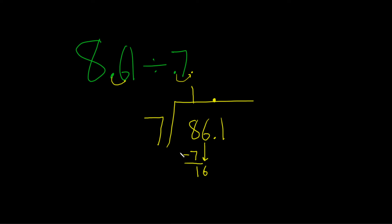Then you repeat. How many times does 7 go into 16? Well, twice. Because 2 times 7 is 14. So you write down the 2. Then you do the multiplication. 2 times 7 is 14.